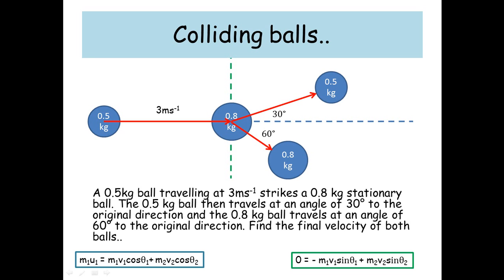The first equation is m1u1 equals m1v1 cos theta 1 plus m2v2 cos theta 2, and that's all to do with the momentum in the x-plane — the idea that momentum in the x-plane is conserved. The second equation is 0 equals minus m1v1 sin theta 1 plus m2v2 sin theta 2, taking into account that momentum in the y-axis is also conserved.